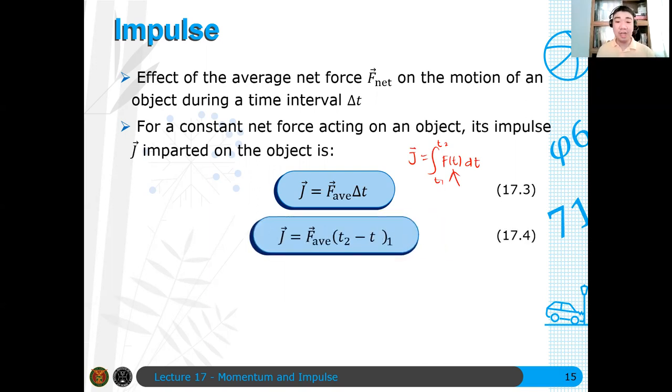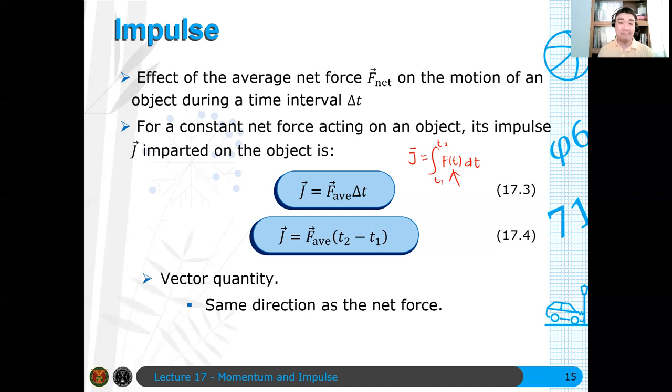Now J is just equal to F_average multiplied by some final time minus initial time, the difference in two times. So of course, a vector quantity because, again, force is a vector quantity. And it also points in the same direction as the net force. So there's a unit, this newton second, which is actually equivalent to kilogram meter per second. Note that they have the same, impulse and momentum have the same units. Pansin nyo, di ba? Paras dapat units yan. But in our context, mas gamit yung newton second when you define what impulse is. Mas gamit yung newton second as an SI unit. But of course, they're the same. They're equivalent.